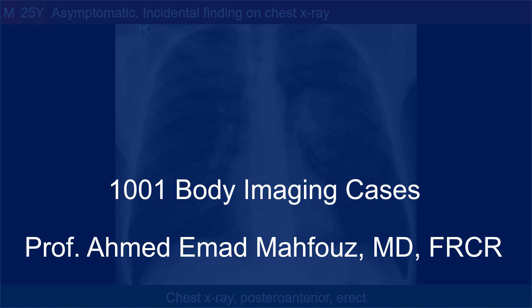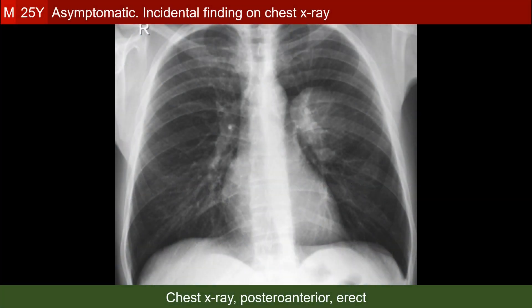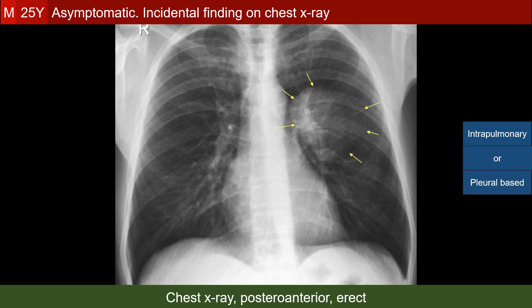Welcome to the body imaging cases. This is an asymptomatic young male with an incidental finding on chest x-ray. Practically speaking, the best thing to do when an opacity is encountered incidentally on a chest x-ray is CT.